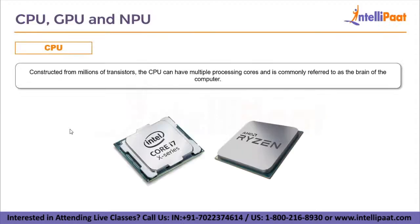Now what is a CPU? Constructed from millions of transistors, the CPU can have multiple processing cores. It usually has 4, 8, or 16 cores nowadays, and is commonly referred to as the brain of the computer. It is essential to all modern computing systems as it executes the commands and processes needed for your computer and operating system. The CPU is also important in determining how fast programs can run, from surfing the web to building spreadsheets.